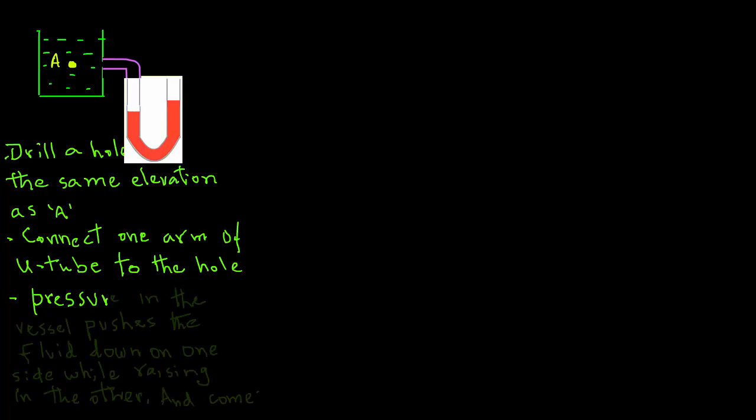The fluid from the vessel will enter the U-tube and push the manometer fluid down on one side of the arm, while raising the fluid level in the U-tube on the other side. It will come to rest after some time. Now we can determine the pressure at location A.